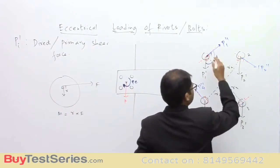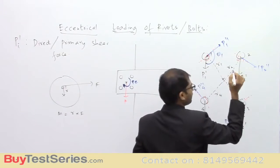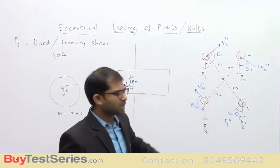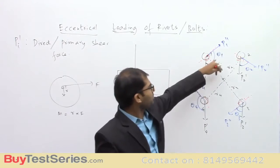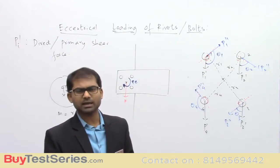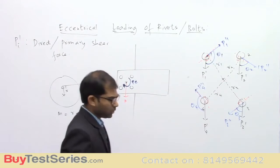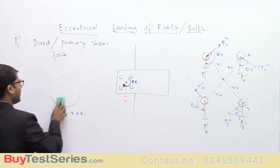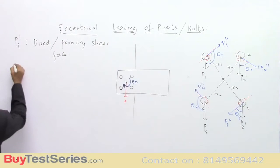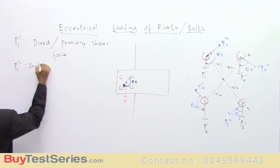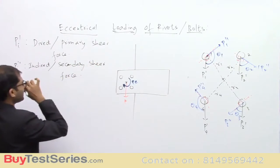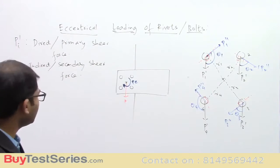The angles between primary and secondary forces at each rivet are denoted θ1, θ2, θ3, θ4. From geometry, if rivets are on the corners of a square these values are 135°, 45°, 45°, 135° respectively, but we provide a generalized explanation here. The secondary loads are also shear forces because they act parallel to the area of cross-section of the rivets. Generally, Pi'' is called the indirect or secondary shear force.